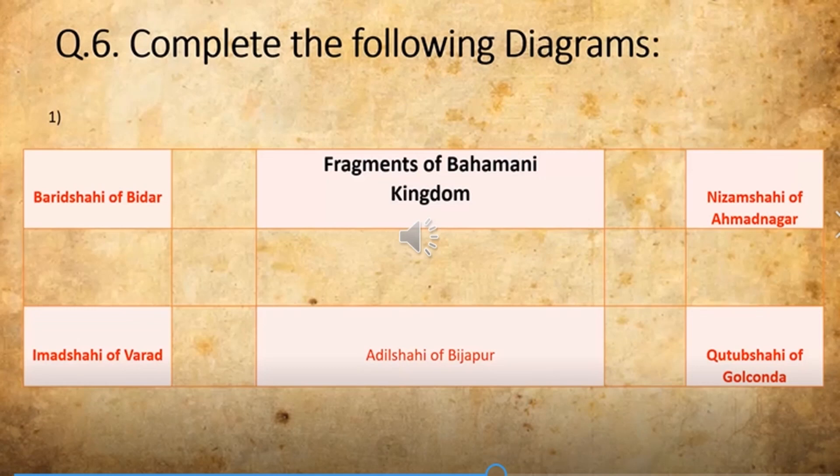Question number 6: Complete the following diagram. Here what they have asked for is fragments of the Bahamani Kingdom. The answer is: Baridshahi of Bidar, Imadshahi of Berar, Adilshahi of Bijapur, Nizamshahi of Ahmednagar, and Qutbshahi of Golconda. Three options will be given here also.